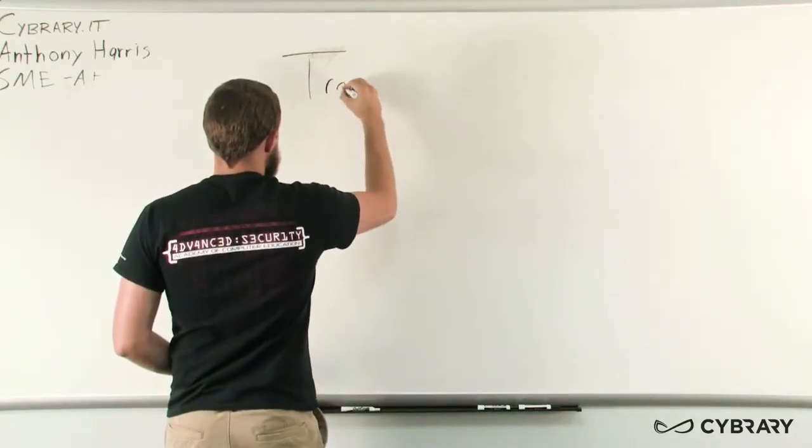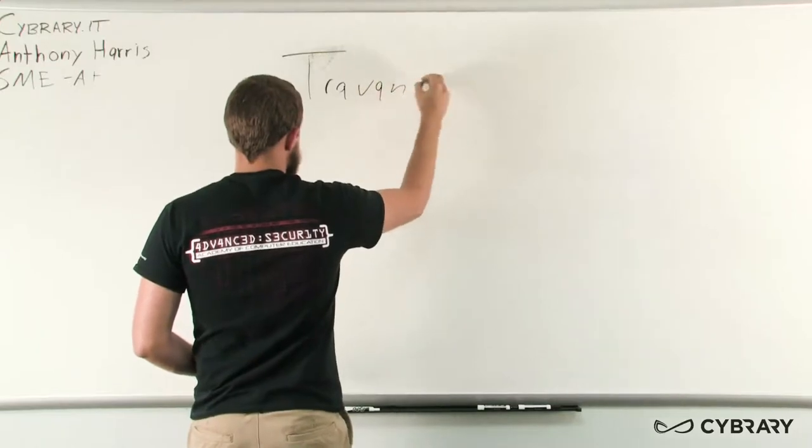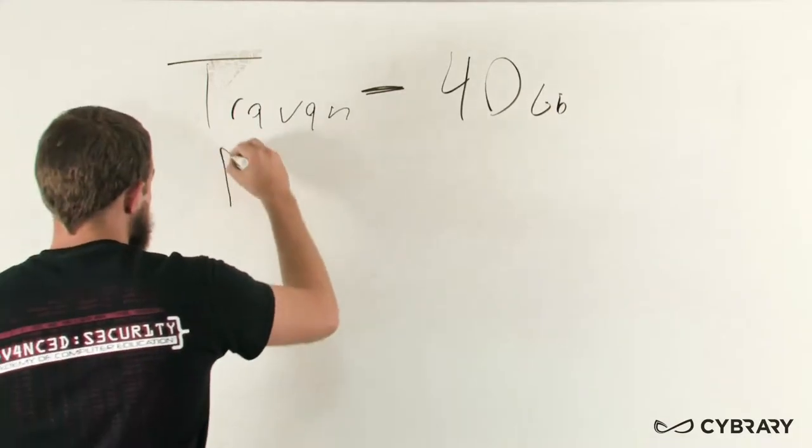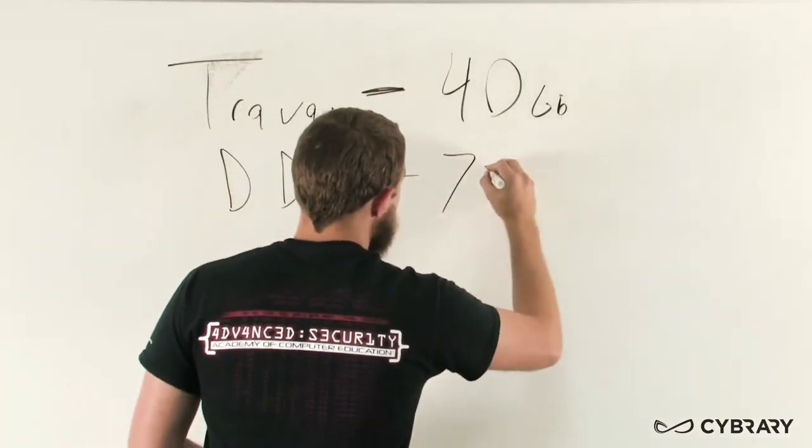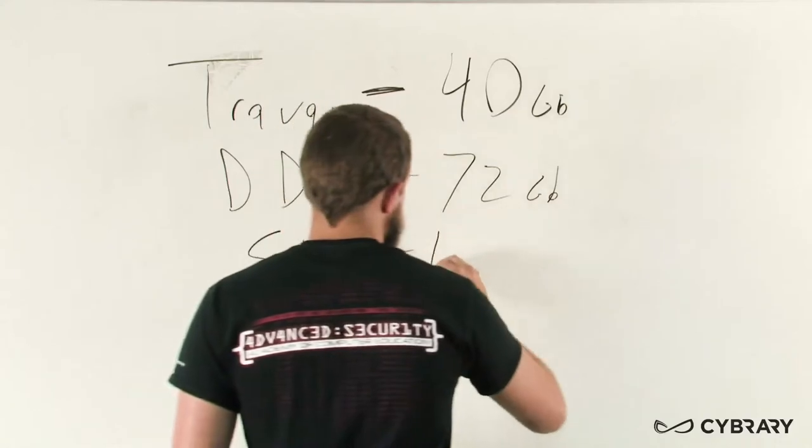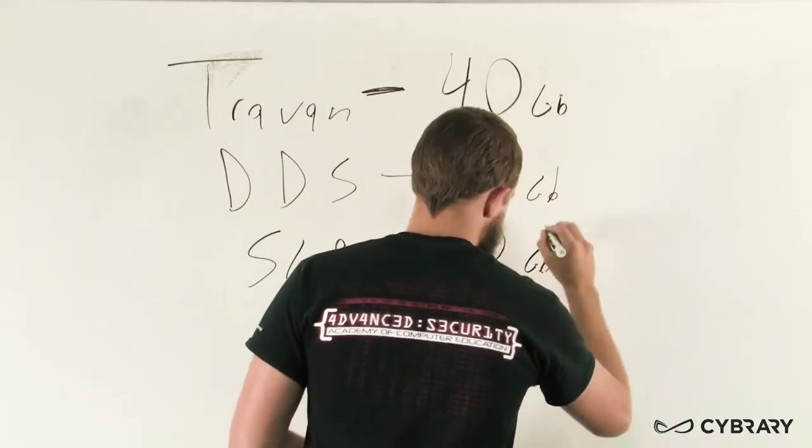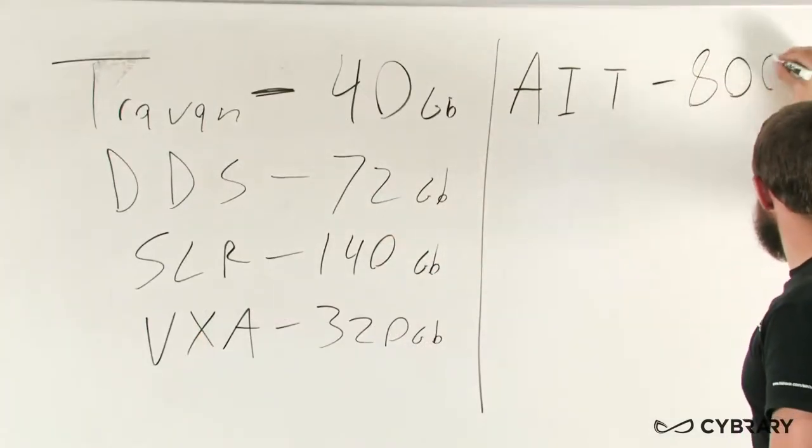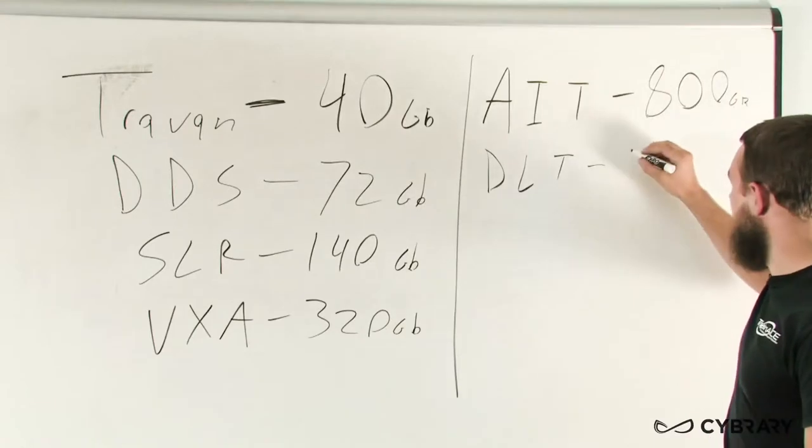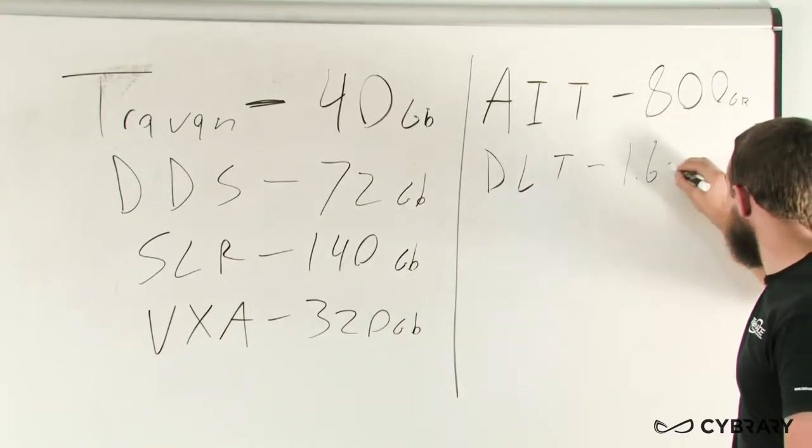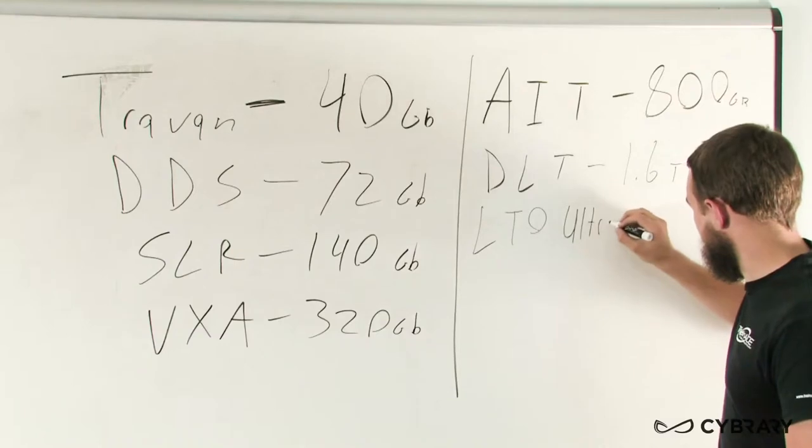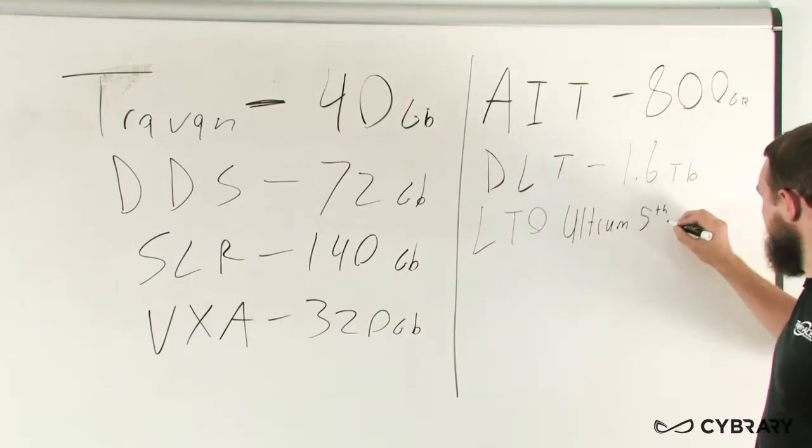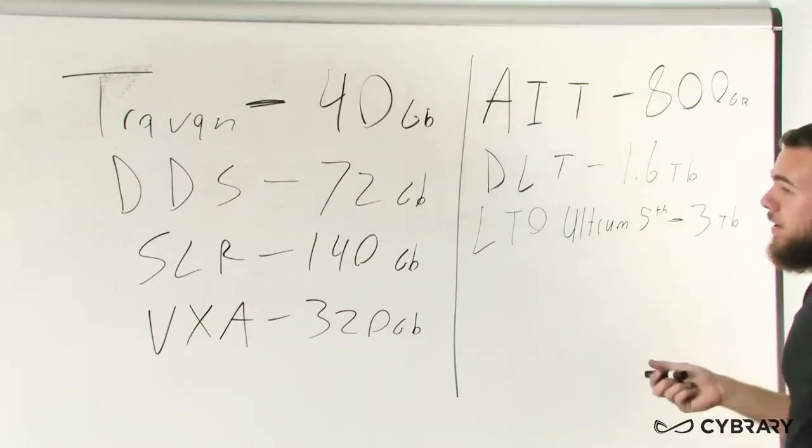When the data is compressed on a Travan tape drive, we can store up to 40 gigabytes of data on our single tape drive. The next type is DDS, which can be up to 72 gigabytes, followed by SLR, which can have up to 140 gigabytes. VXA can have up to 320 gigabytes. AIT can have up to 800 gigabytes of data. DLT can have up to 1.6 terabytes of data. And lastly, our LTO Ultrium 5th edition can actually store up to 3 terabytes of data.